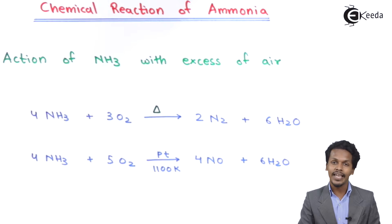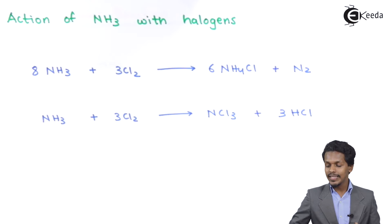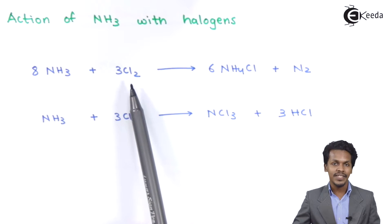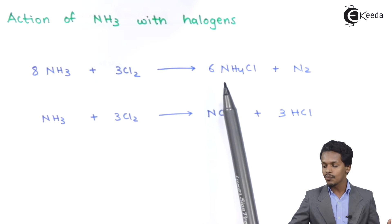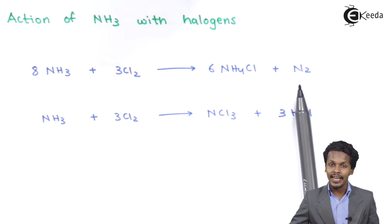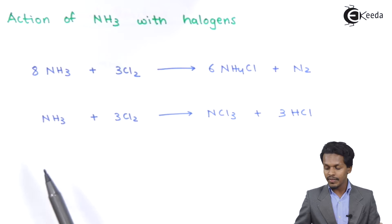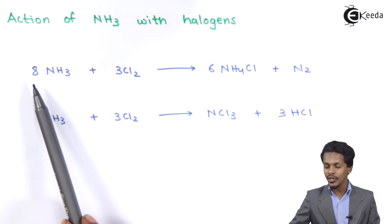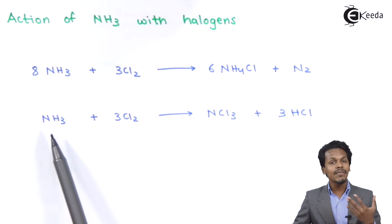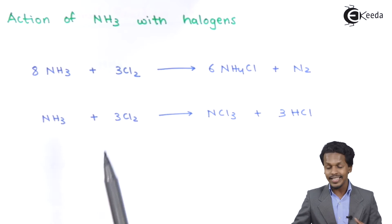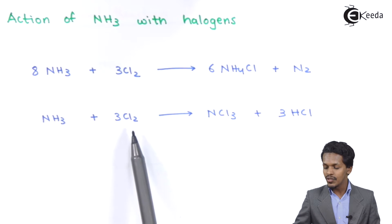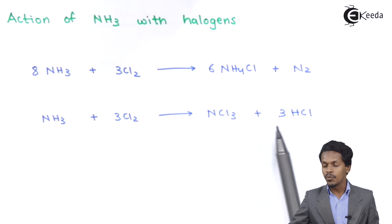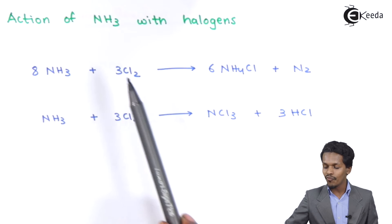Now let's talk about the action of ammonia with halogens. When 8 moles of NH₃ are treated with 3 moles of Cl₂, the products are 6 moles of ammonium chloride along with nitrogen gas. However, in the alternative reaction where 1 mole of ammonia reacts with 3 moles of Cl₂ — meaning chlorine is in excess — the reaction produces nitrogen trichloride along with 3 moles of HCl.